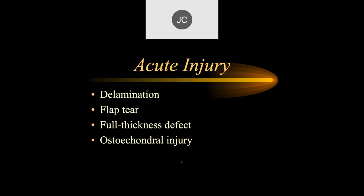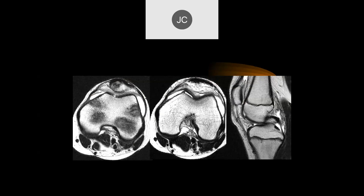Let's look at acute injuries to articular cartilage. You can get delamination, flap tears, full thickness defects with injury to the bone, and you can also get injury to the bone without cartilage injury. Here's a case showing a full thickness fissure in the articular cartilage where fluid undermines the cartilage — separation that typically goes through the calcified layer where the cartilage separates from the underlying bone. This is called a delamination injury.